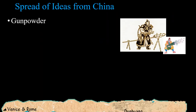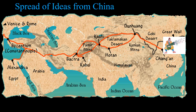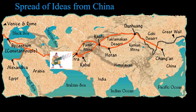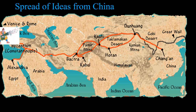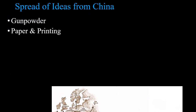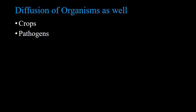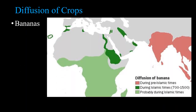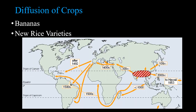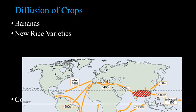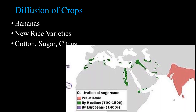So, gunpowder from China, paper and printing. We also get organisms: crops and pathogens. New crops include bananas, new rice varieties, cotton, sugar, and citrus — thanks to the Islamic world.